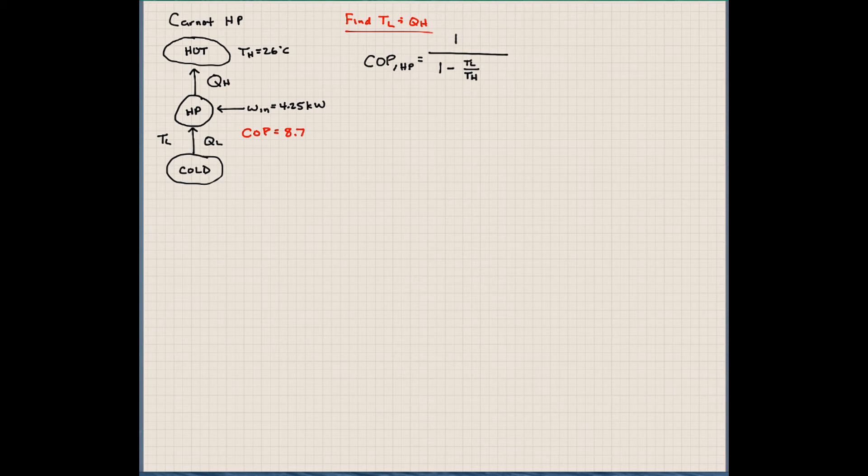So for this heat pump, we have a coefficient of performance, which is 8.7. This is equal to 1 divided by 1 minus, and again, when we talk about Carnot cycles, we have to use the absolute temperature scales. So this would be TL divided by